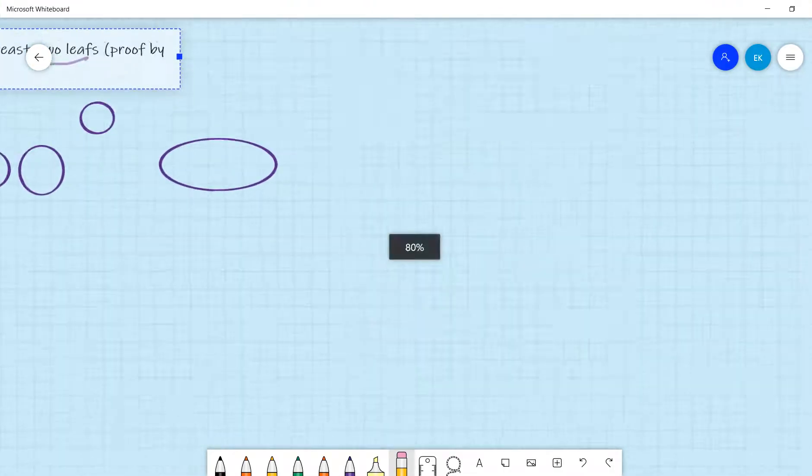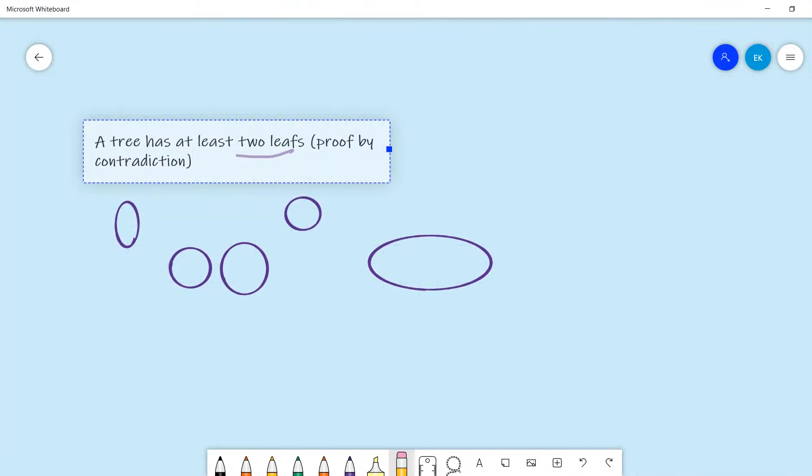Welcome guys, so in this video we prove this fact: a tree has at least two leaves. I should say that n is greater than or equal to three.